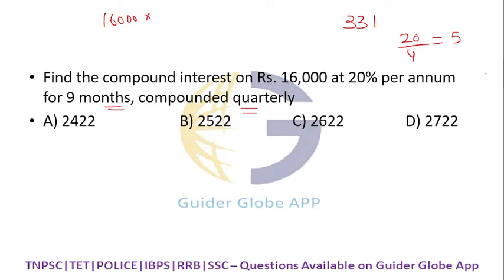This is 5%, so multiply by 5 by 100. How much is that? 800 rupees. This 800 you multiply by 5 by 100, that is 8 into 5 equals 40.